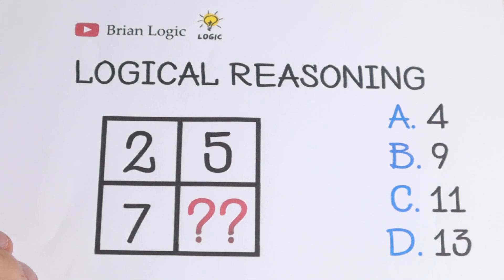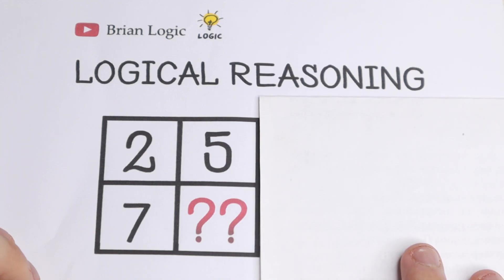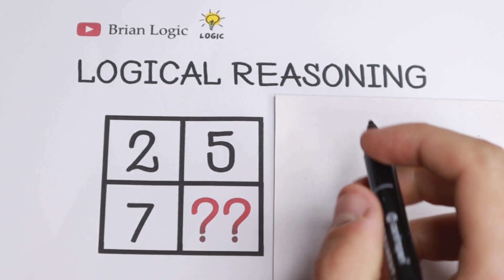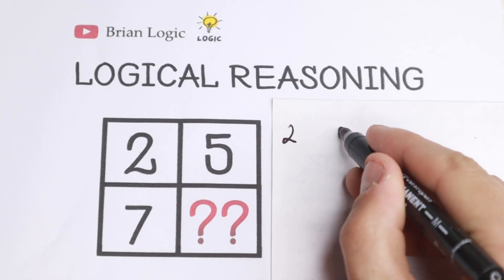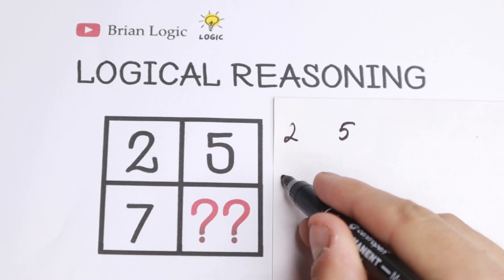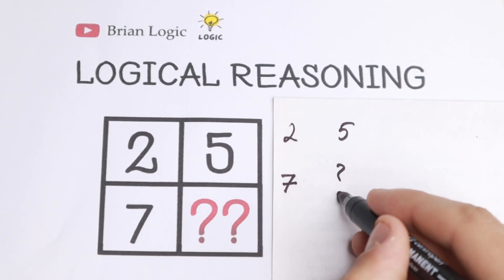What are we going to start with? Take a look right here. We have 2, 5, 7, so let's work with this number. We have 2, 5, 7, and right here we have 7, and we need to find the last number.